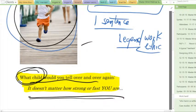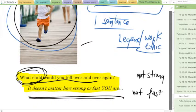Now, if you want to be kind, you can say not strong, not fast, because you would not say it to a strong and fast child. You would only say it to a weak, slow child.